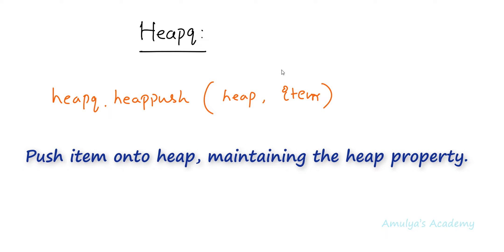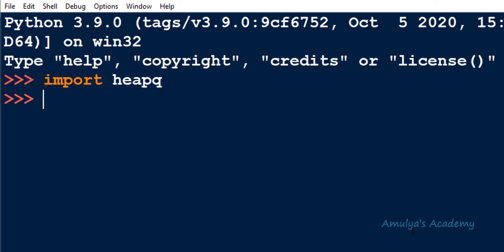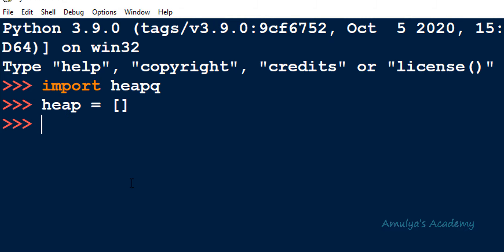What does this function do? This function will insert the item to the heap maintaining the binary heap property — here in the heap queue module, that is the min heap property. So it will insert the new element to the heap by maintaining the min heap property. Let's see an example: first let me create a list, or you can say heap — so now we have an empty heap.